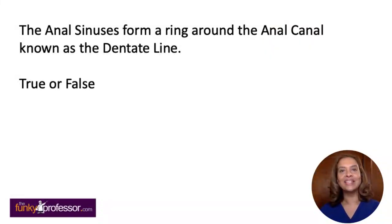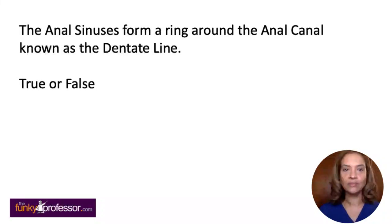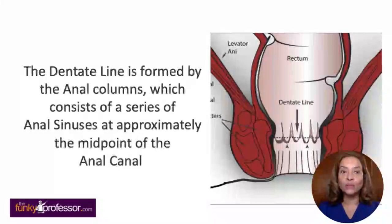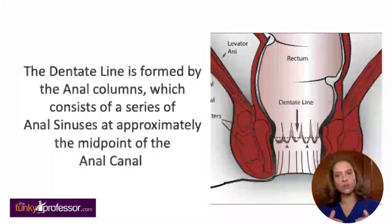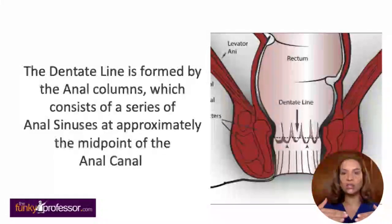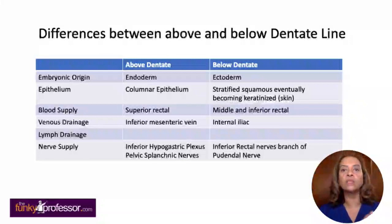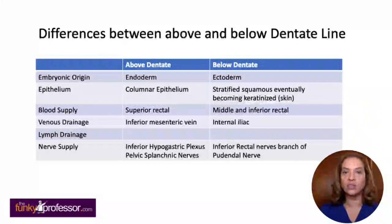The final question: the anal sinuses form a ring around the anal canal known as the dentate line — true or false? This is in fact true. The anal valves form a ring around the anal canal known as the dentate line, also called the pectinate line. It's formed by anal columns around the midpoint of the anal canal and is described as a watershed mark. Above the dentate line the embryonic origin is endoderm (gut tissue), whereas below is ectoderm. The epithelium differs too: columnar epithelium above, and stratified squamous epithelium below, which eventually becomes keratinized like skin.